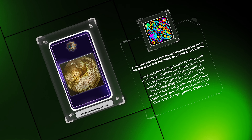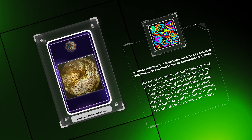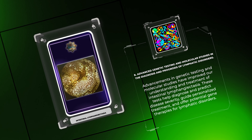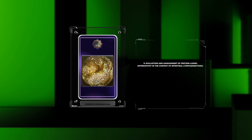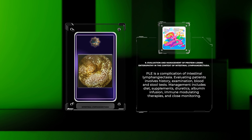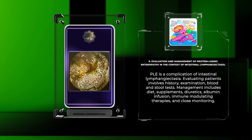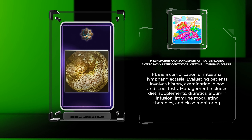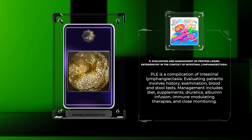Advancements in genetic testing and molecular studies have improved our understanding and treatment of intestinal lymphangiectasia. These tests help diagnose and predict disease severity, guide personalized treatment, and offer potential gene therapies for lymphatic disorders. Evaluating patients with PLE involves history, examination, blood and stool tests, with management including diet, supplements, diuretics, albumin infusion, and immune-modulating therapies.